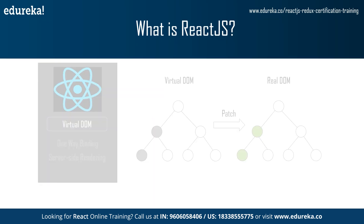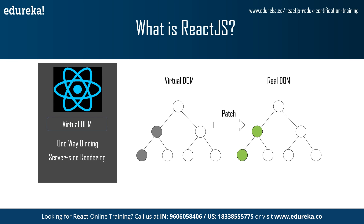Now let's talk about the major aspects of React, which are virtual DOM, one-way binding, and server-side rendering. We have already discussed virtual DOM, but let me tell you: like an actual DOM, virtual DOM is also a node tree that lists the elements and their attributes and content as objects and their properties. React's render function creates a node tree out of the React components, then updates this tree in response to mutations in the data model caused by various actions done either by the user or by the system.